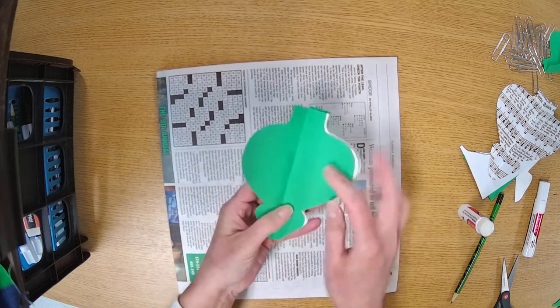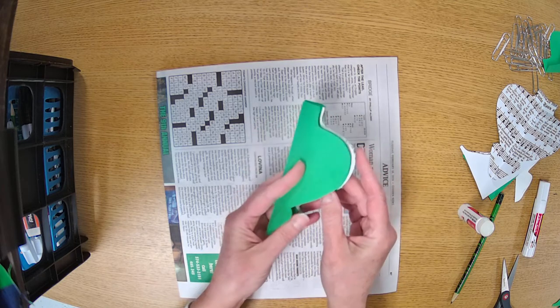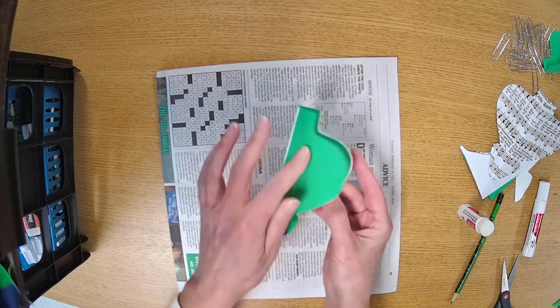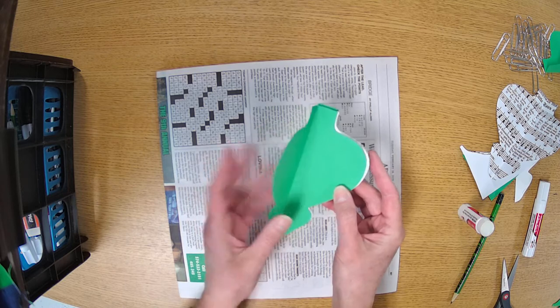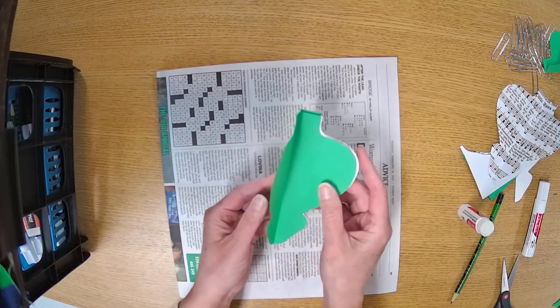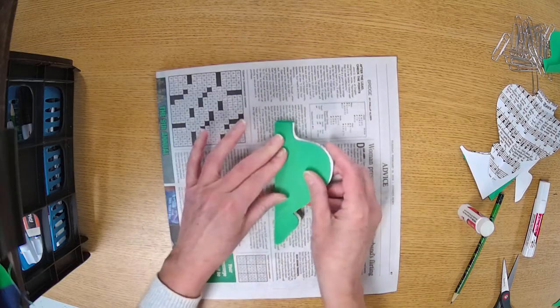It's important that you don't glue inside the fold. If you think of this like a book and this is the cover and this is the inside of a book, you don't want to glue the inside of a book. You just glue your pieces together.